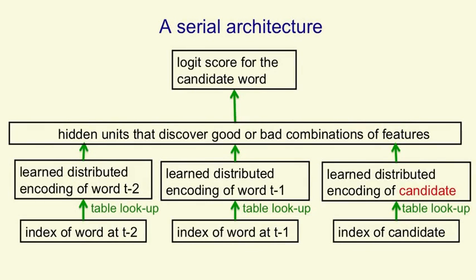One way to avoid having 100,000 different output units is to use a serial architecture. We put in the context words as before, but now we also put in a candidate for the next word in the same way as the context words. Then we go forwards through the net, and what we output is a score for how good that candidate word is in that context. Of course, we have to run forwards through this net many, many times, but most of the work only needs to be done once. The only bit we need to run for each candidate word is the inputs coming from the candidate word and the final output to the score, and that doesn't have many weights in it.